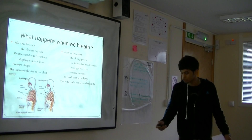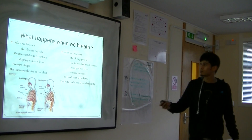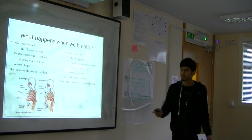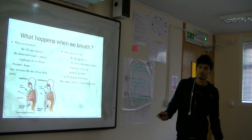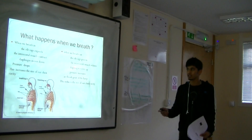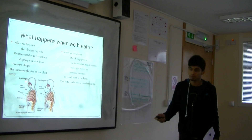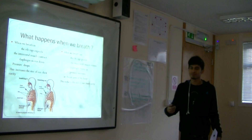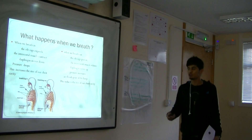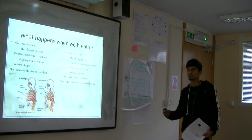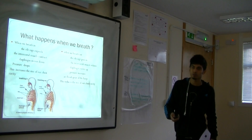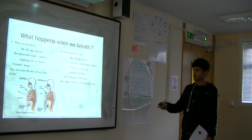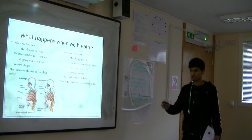What happens when we breathe in: the ribcage expands, the intercostal muscles contract, the diaphragm moves down, pressure drops, and the chest cavity increases. When we breathe out it is the opposite — the ribcage contracts, the intercostal muscles relax, and the diaphragm moves up, reducing the chest cavity whilst the air pressure increases.